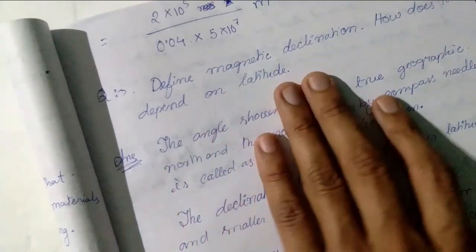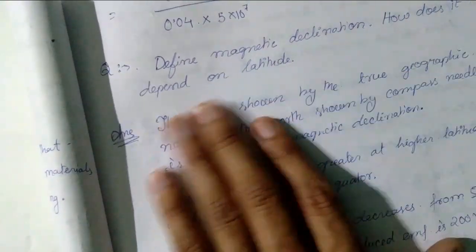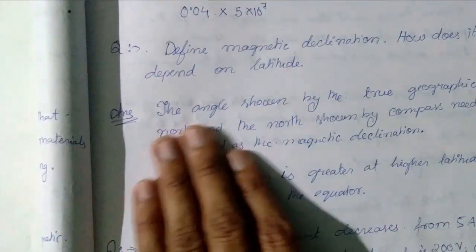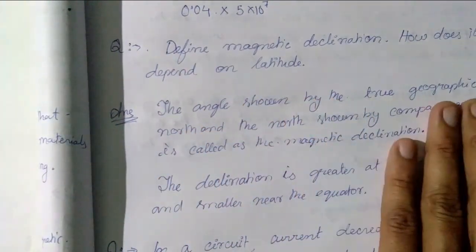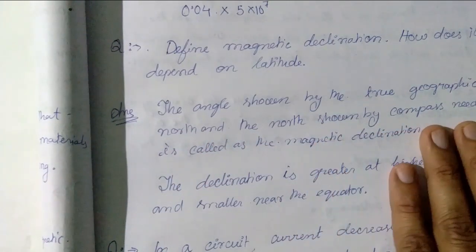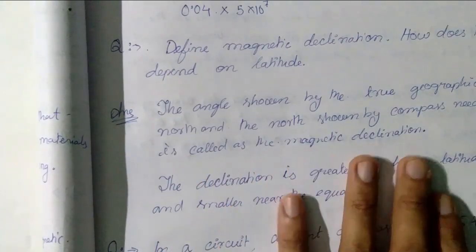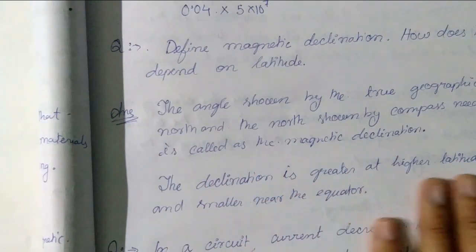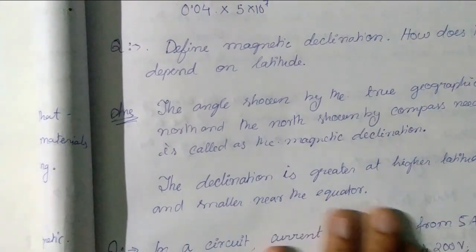Next question. Define the magnetic declination and how does it depend upon the latitude. The angle that is made by the true geographic north and the north which is shown by the compass needle is known as the magnetic declination, and the declination is greater at higher latitude and smaller near the equator.